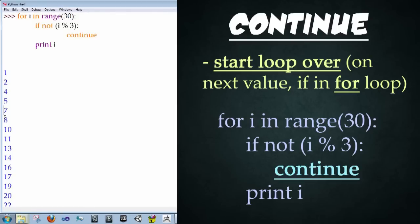And so now we print only non-multiples of 3. So 1, 2, 4, 5, 7, 8, 10, 11, and so on. Perfect.